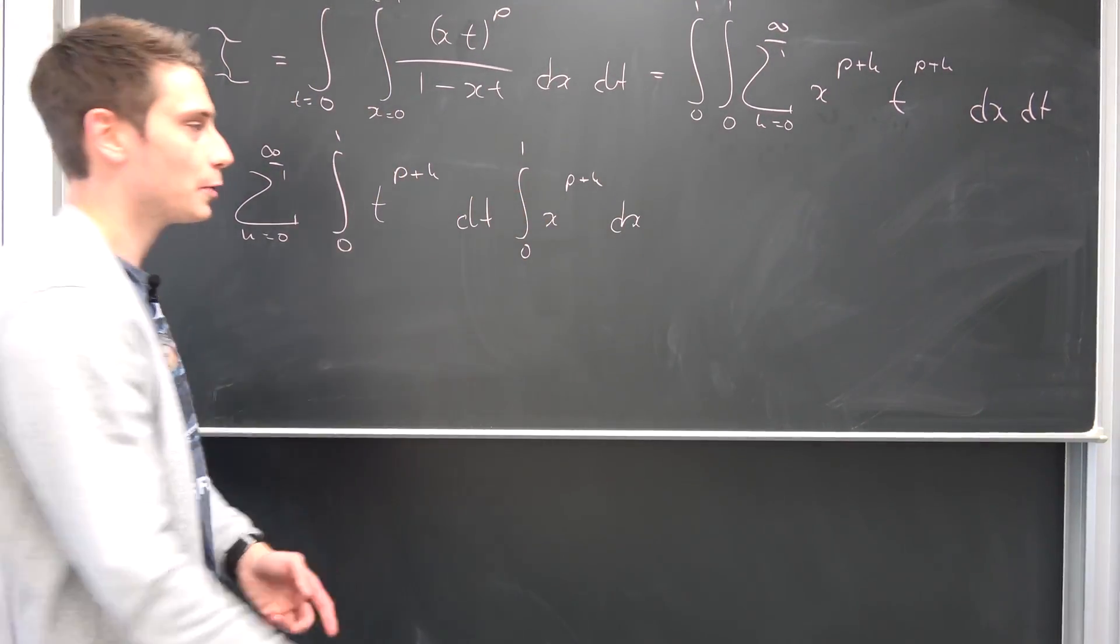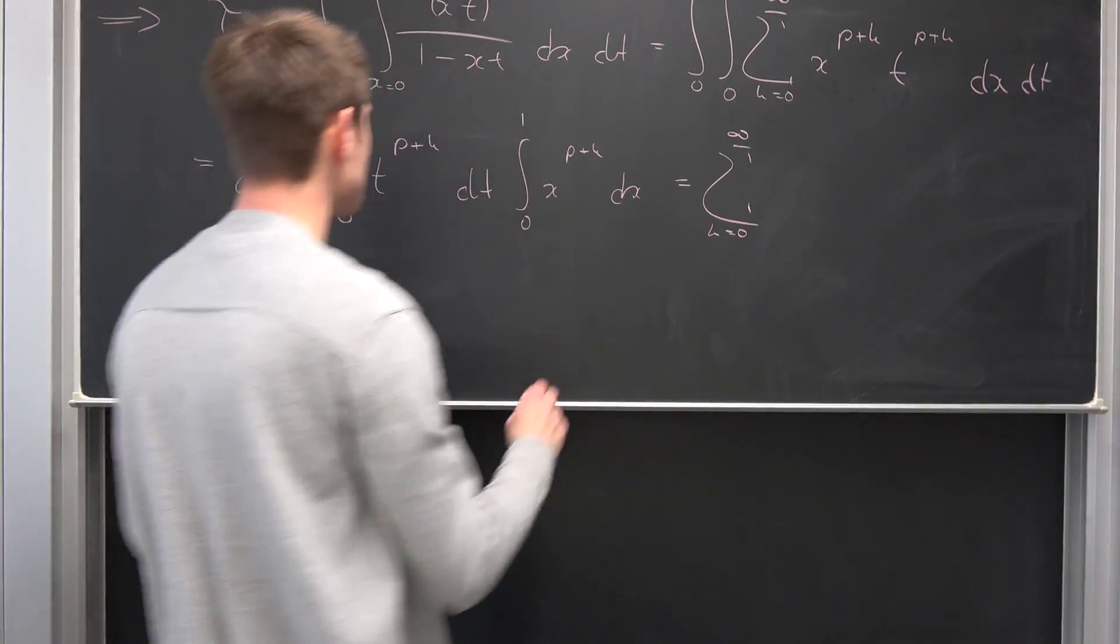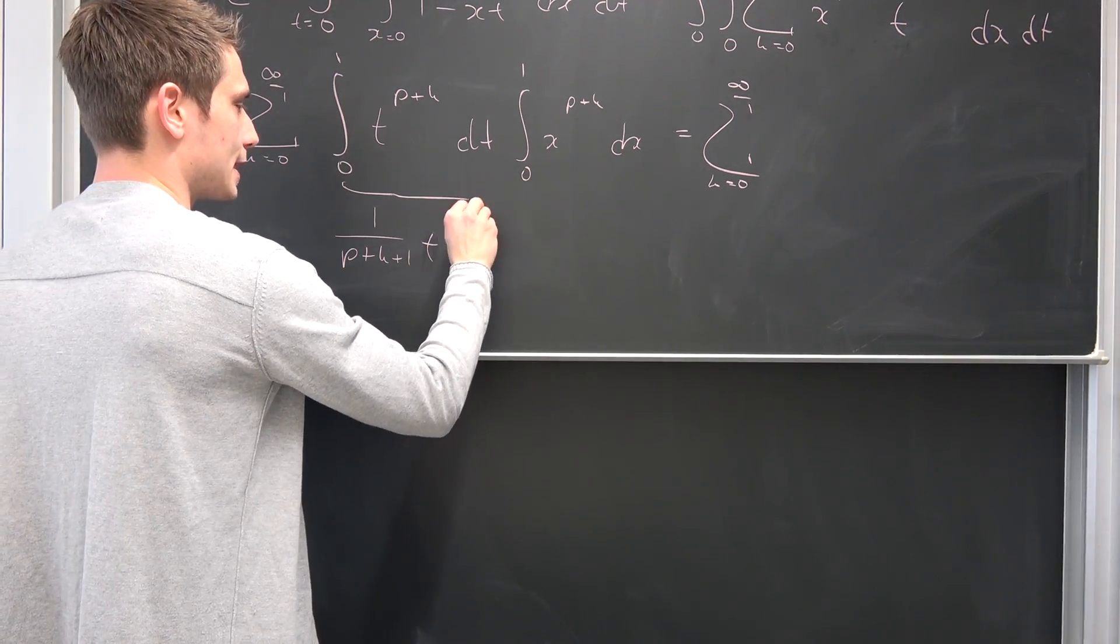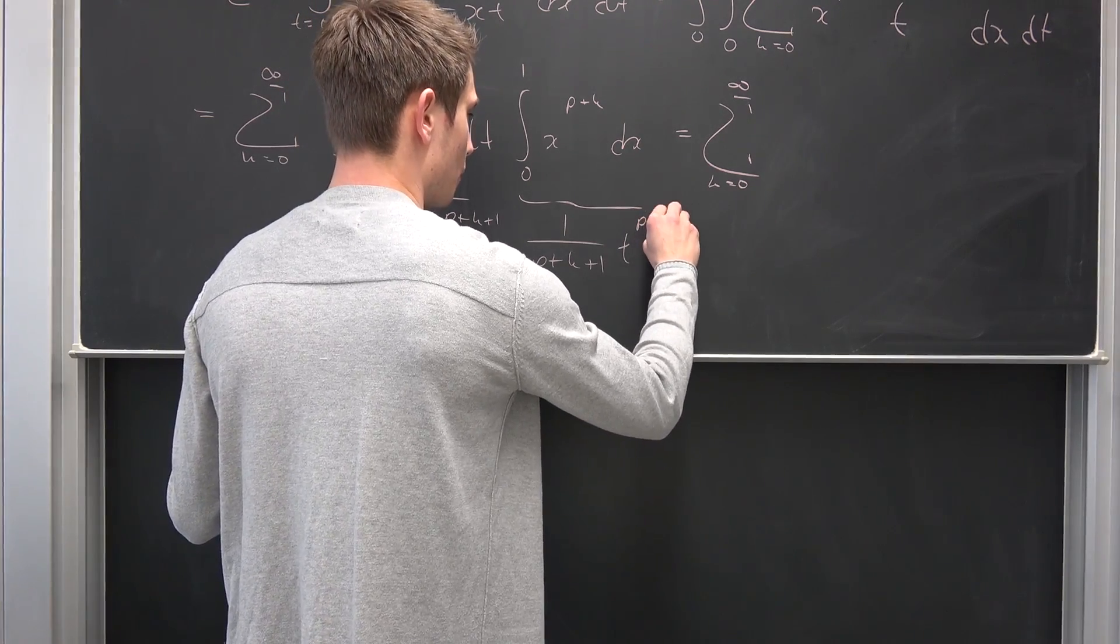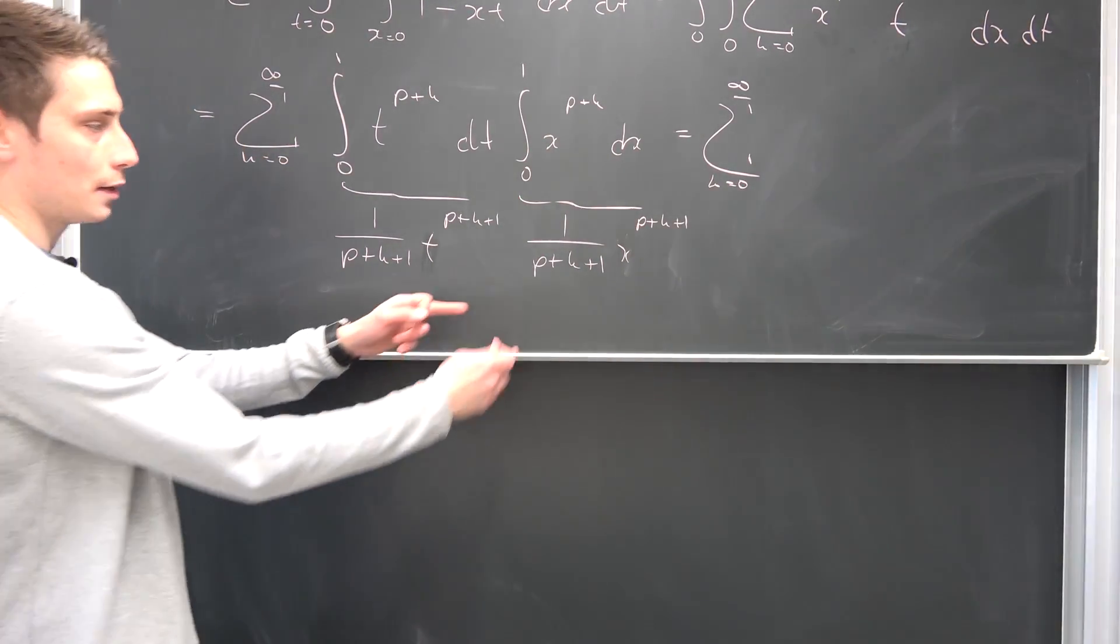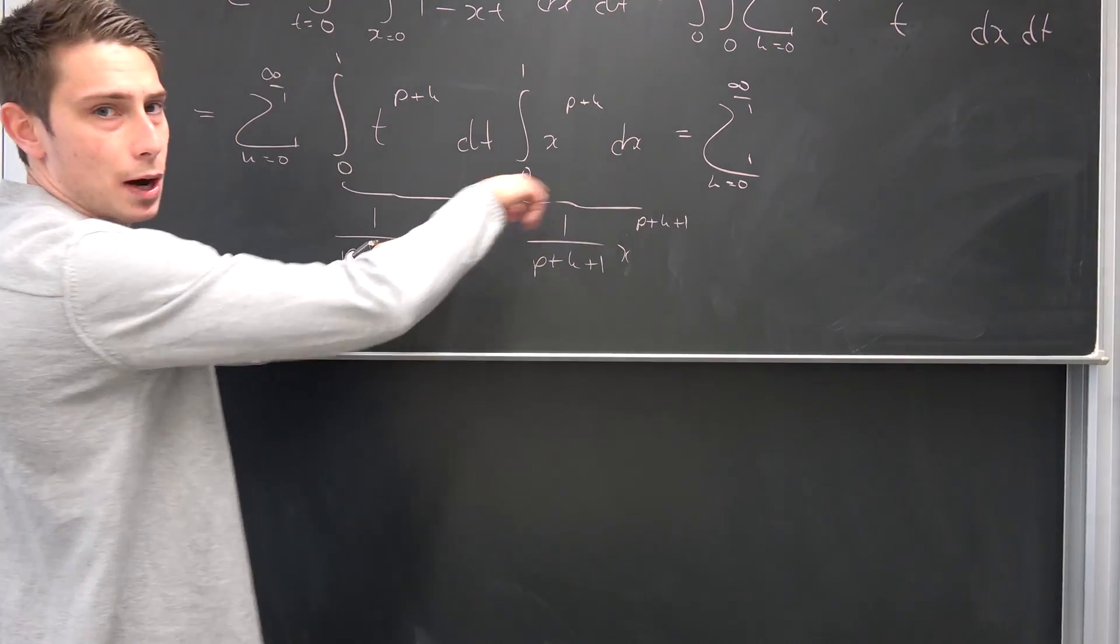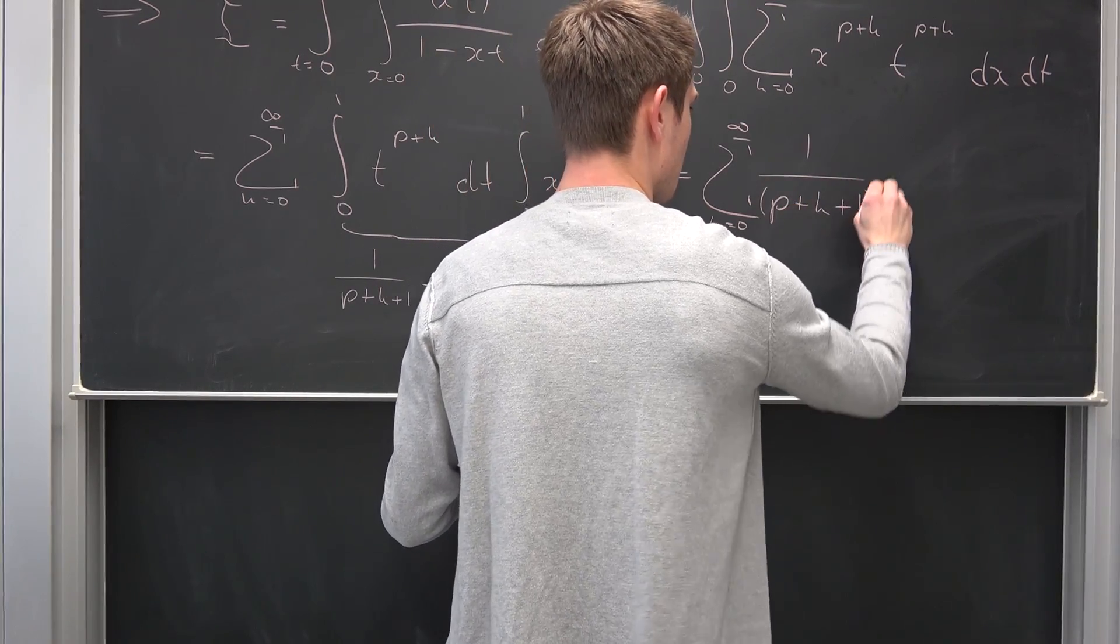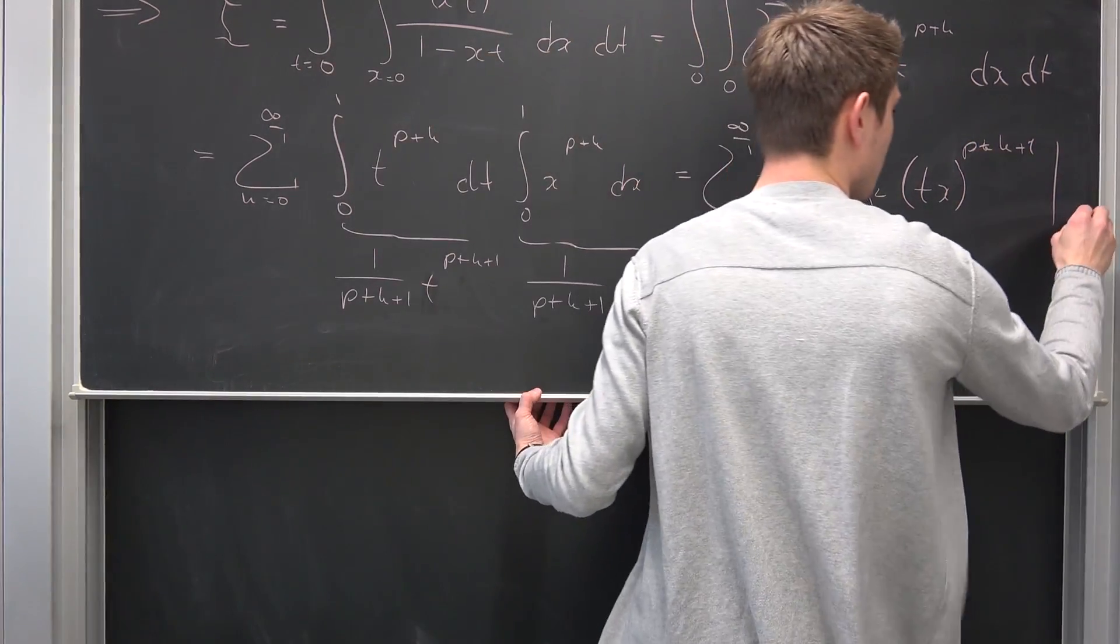So at first we are going to evaluate the integral from 0 to 1 of t to the p plus kth power integrated with respect to t, and then the integral from 0 to 1 of x to the p plus kth power integrated with respect to x. Integrating polynomials is really quite easy. Everyone knows how to do this. So now we have a sum running from 0 to infinity. This is going to give us 1 over p plus k plus 1 times t to the p plus k plus 1th power, and this right here analogously 1 over p plus k plus 1 times x to the p plus k plus 1th power.